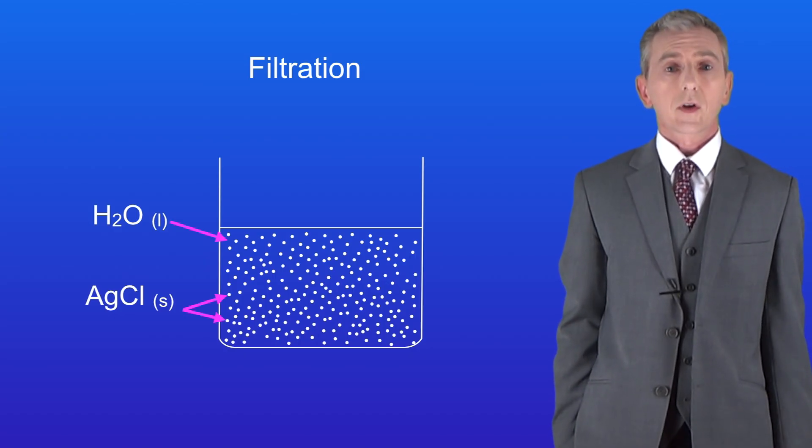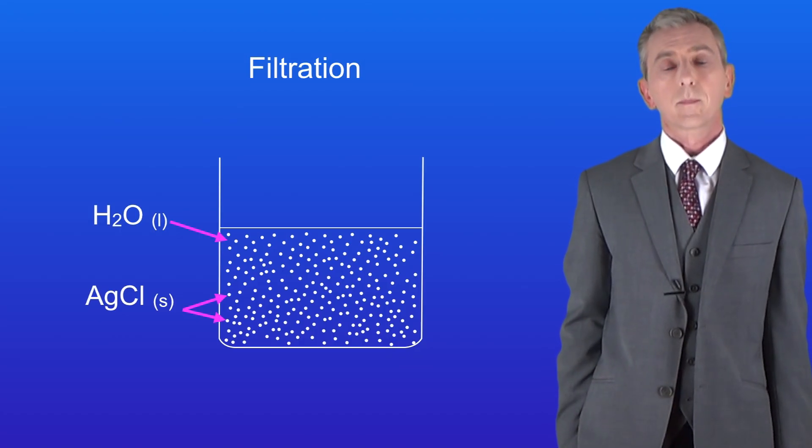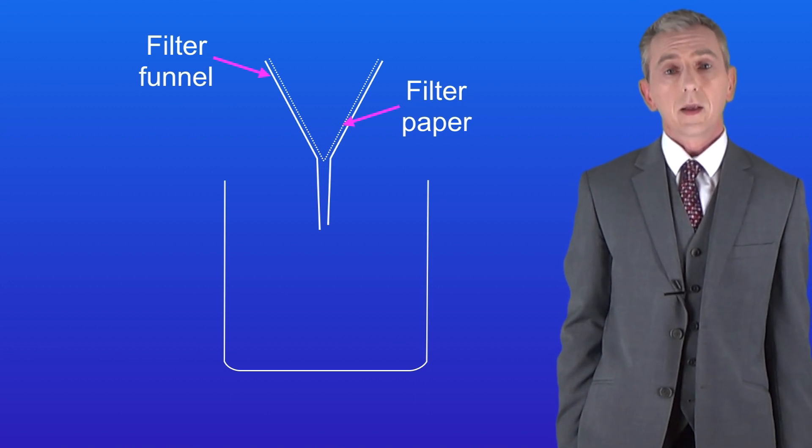So because the silver chloride is insoluble in water we can use filtration to separate these two substances. To do this we use a filter funnel and a filter paper like this.